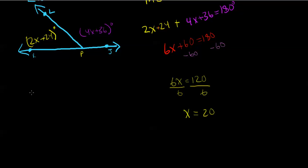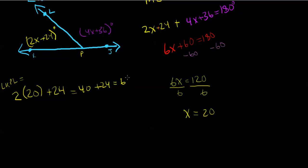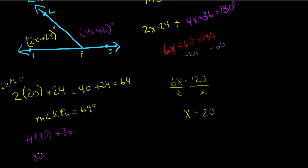Now we evaluate the original expressions using x = 20. The measure of angle KPL equals 2x + 24: plugging in 20 gives 2(20) + 24 = 40 + 24 = 64. So angle KPL is 64 degrees. The measure of angle JPL equals 4x + 36: plugging in 20 gives 4(20) + 36 = 80 + 36 = 116. So angle JPL is 116 degrees.